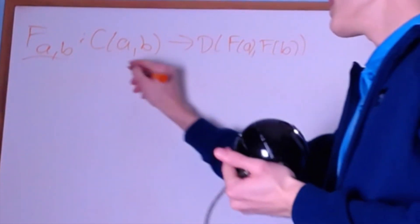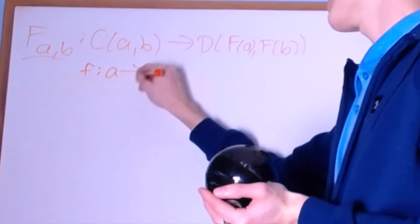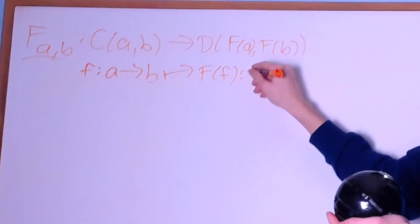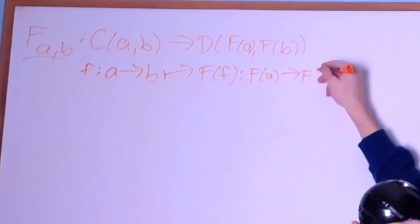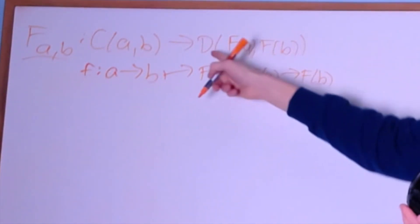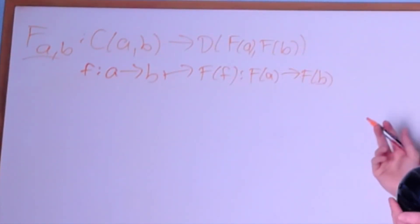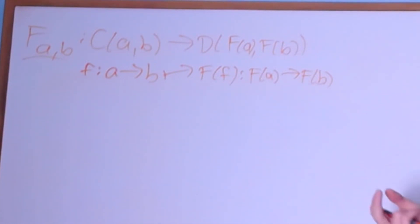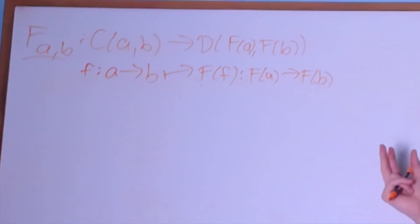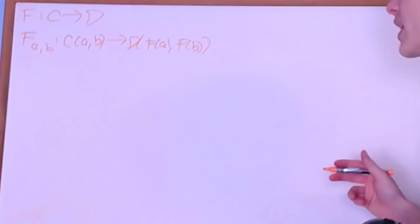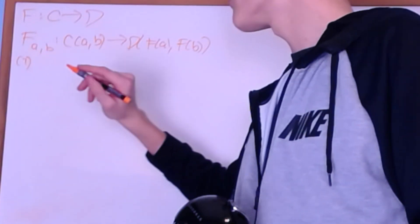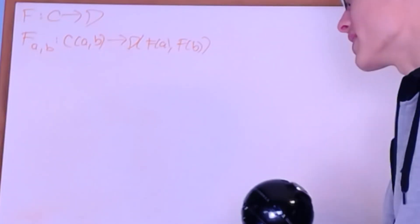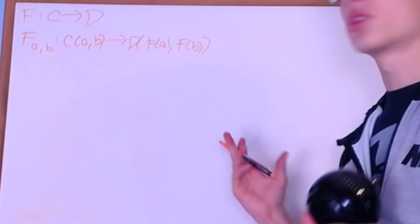Specifically, what it'll do is send an arrow f from A to B — as an element of this Hom-set — to the functor applied to the arrow, which is from F(A) to F(B), and you can see how that is an element of this Hom-set. This is really just the restriction of the functor to the arrows between two objects, which allows us to analyze the fullness or faithfulness of this functor. The properties of fullness and faithfulness are just the surjectivity and injectivity of these component functions, and this is only true for locally small categories.